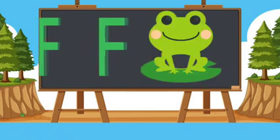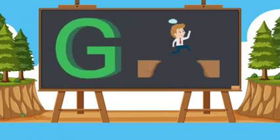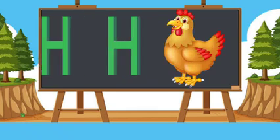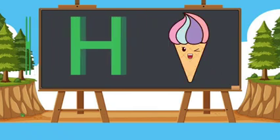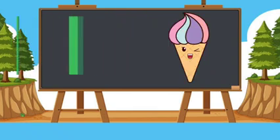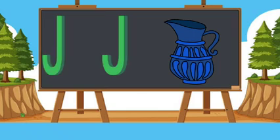F for frog, G for gap, H for hen, I for ice cream, J for jug.